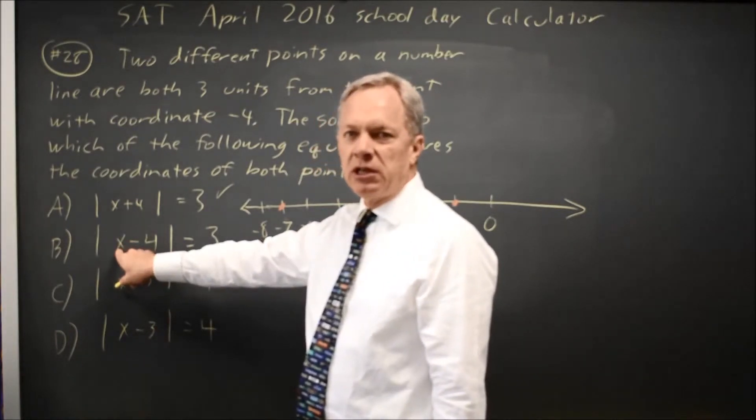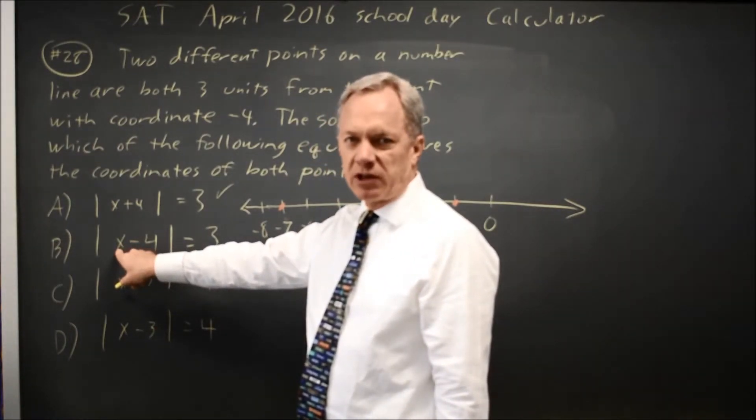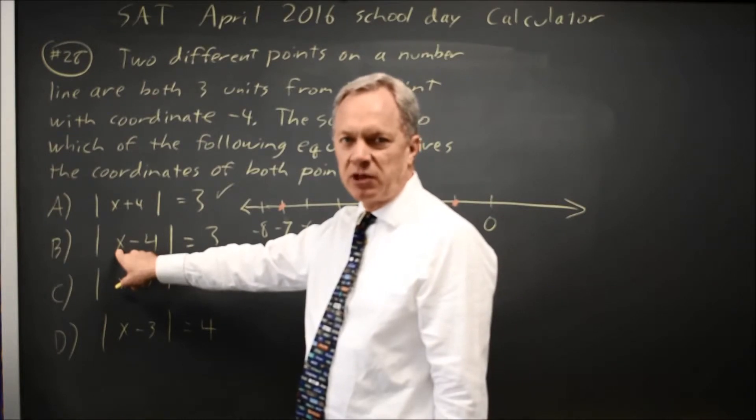If I try choice B, negative 7 minus 4 is negative 11, absolute value is positive 11, which is not 3.